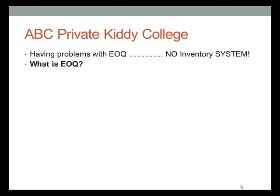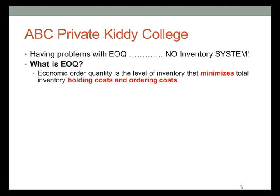Here is the problem: too much inventory and we incur holding costs; not enough inventory and our customers may go elsewhere. EOQ is the economic order quantity, which is the level of inventory that minimizes total inventory holding costs and ordering costs. It uses a maximum and minimum point.